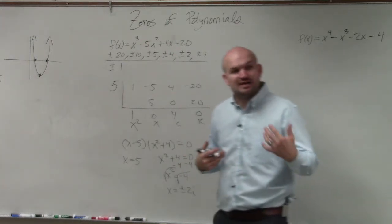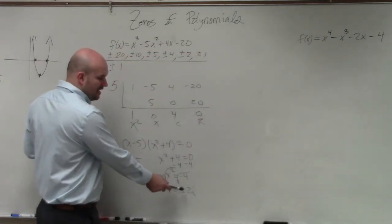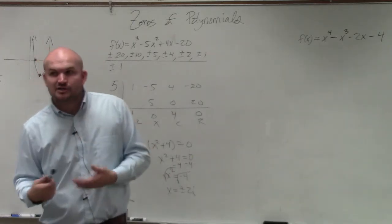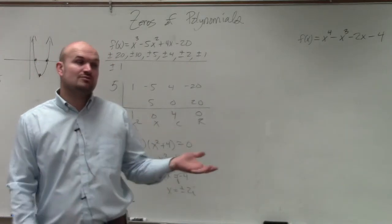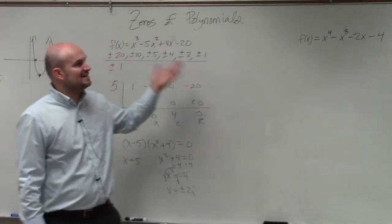So I also want you guys to recognize that these 2i, these come together. These are what we call conjugate pairs. So whenever you have a positive i, you're going to have the negative i, just like the square root. If you have a square root of 5, you're going to have a negative square root of 5.